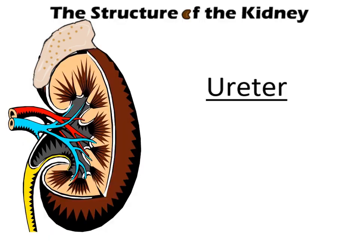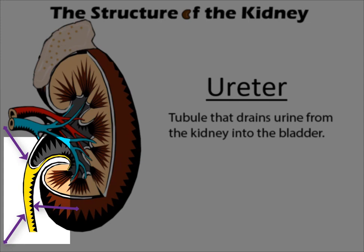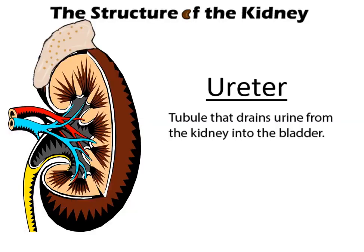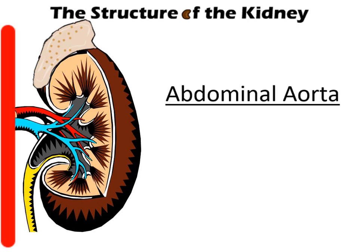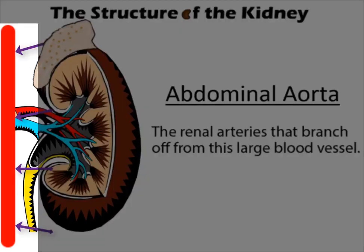Ureter: a tubule that drains urine from the kidney into the bladder. Abdominal Aorta: the renal arteries branch off from this large blood vessel.